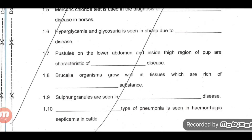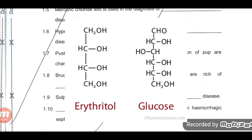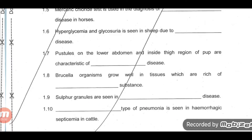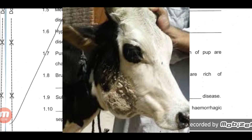Question 6: Brucella organisms grow well in tissues which are rich in erythritol substance. Erythritol is present in large amounts in the placenta and genital tissue. Question 7: Sulfur granules are seen in actinomycosis disease, also called lumpy jaw disease.